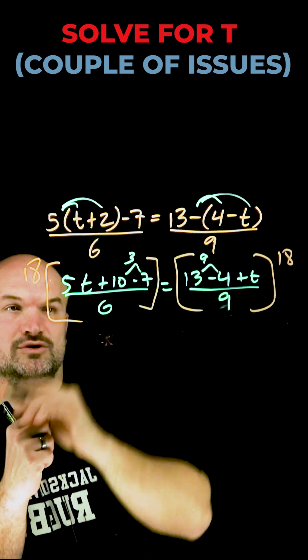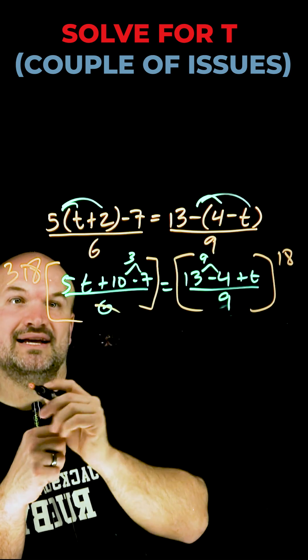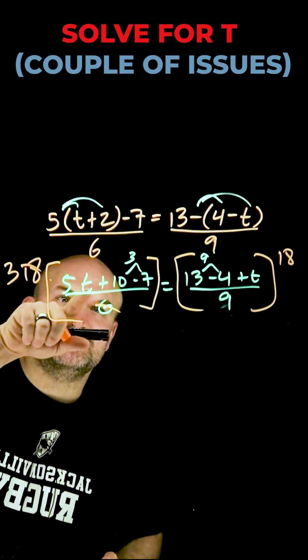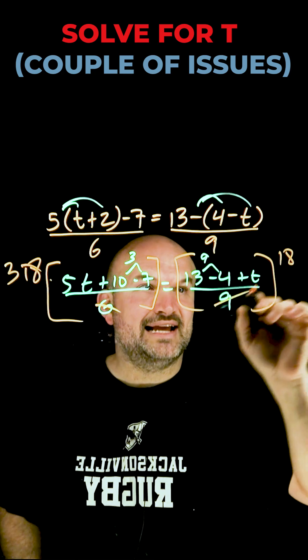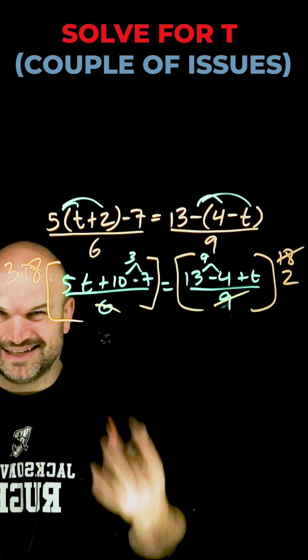Okay, so the reason why this is going to work or get rid of this is 6 divides into 18 three times. Now, I can apply 3 times my 5t plus 3. And over here, 9 divides into 18 two times. So now I can apply 2 times this expression. It's going to look like this.